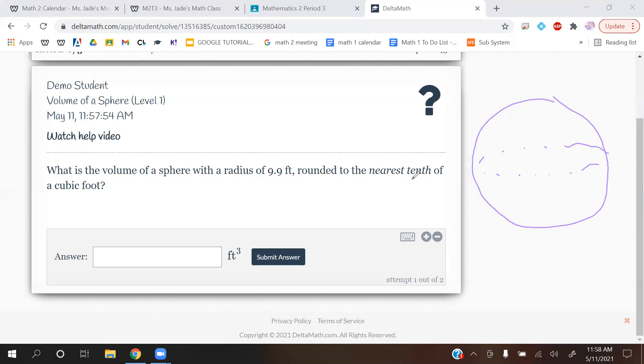Okay, so the formula for this is 4 over 3 pi r cubed. Formula for the volume of a sphere. I'll give you guys like a couple seconds to write that down, and then I'll read this example to you.